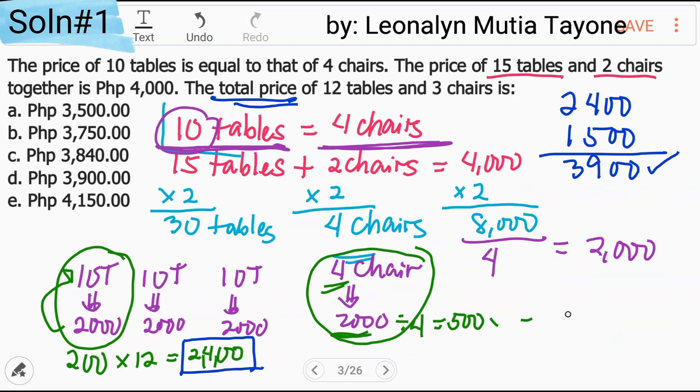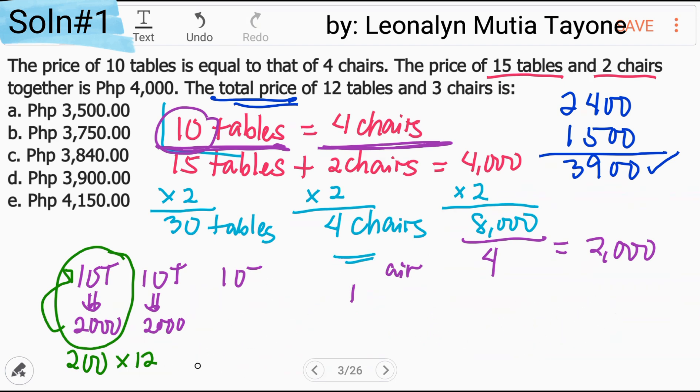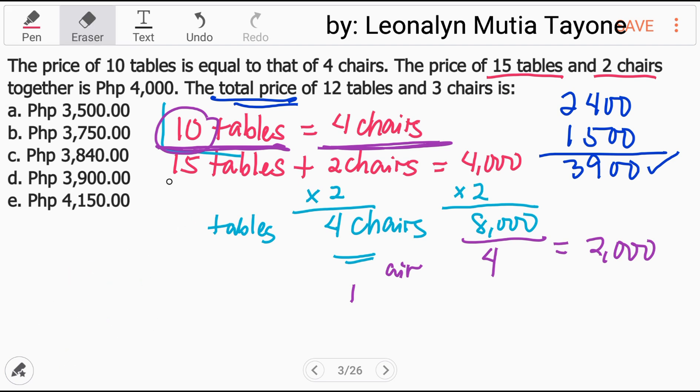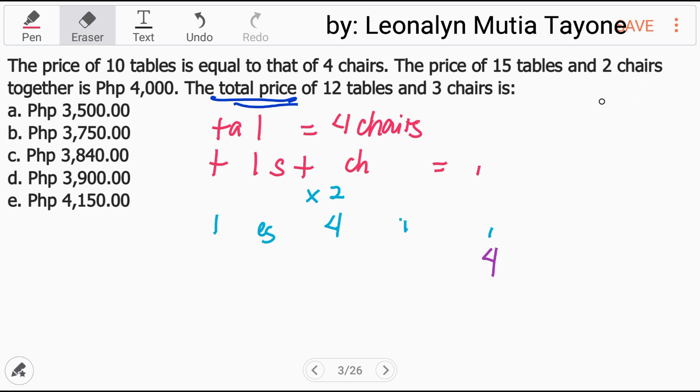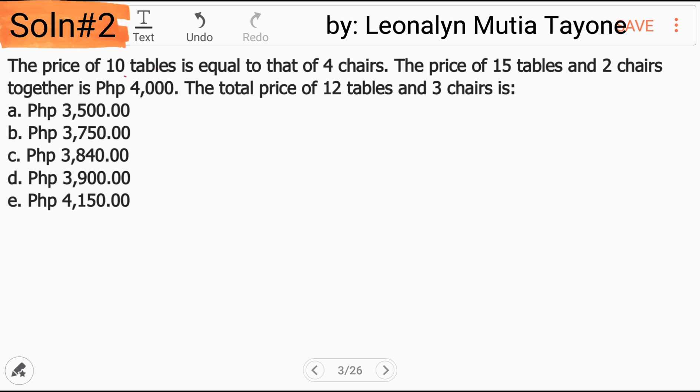Kung sakaling naguluhan kayo dito sa ating solution number 1 na tinatawag kong kanto-style way of solving, then dito tayo sa algebraic way of solving. Kapag sinabing algebra, meron tayong mga variables. Let T para sa tables, yung price sa tables, at C para sa price natin sa chairs.